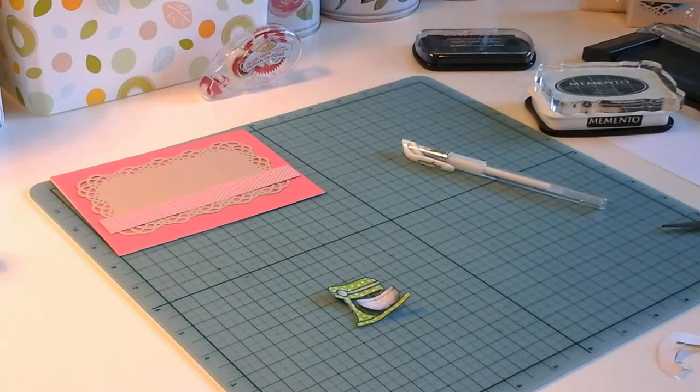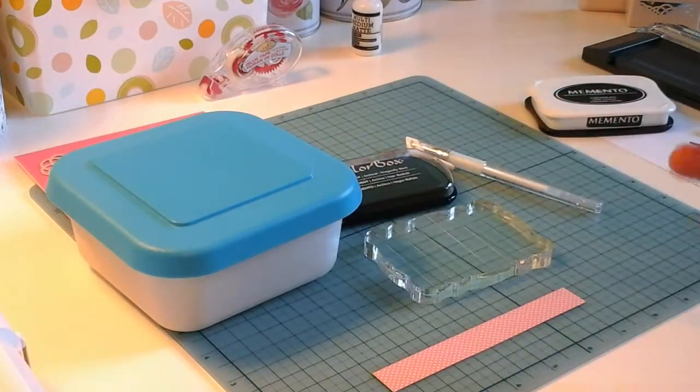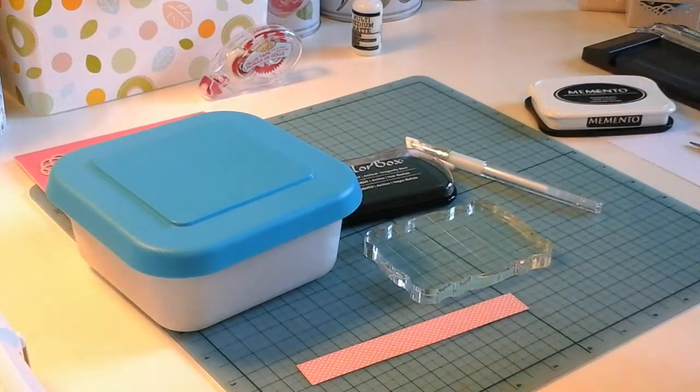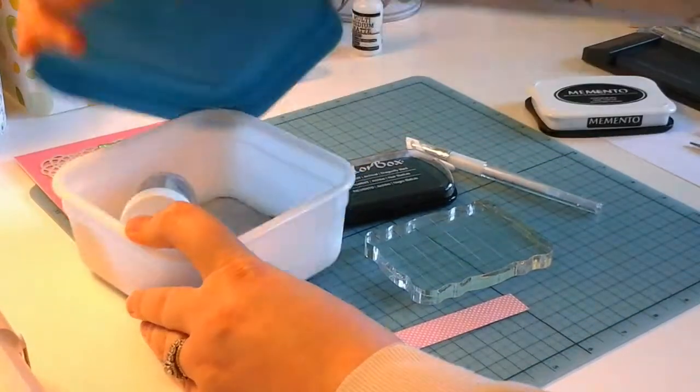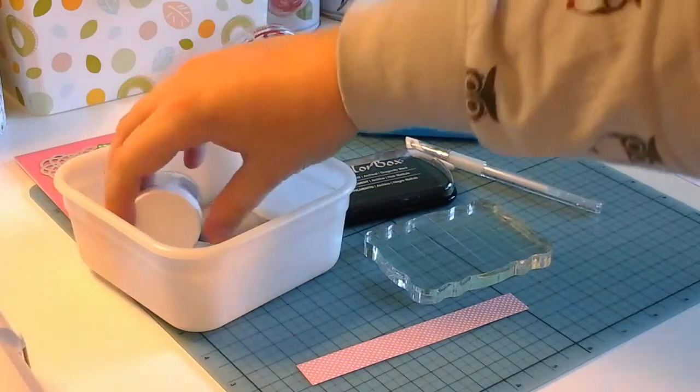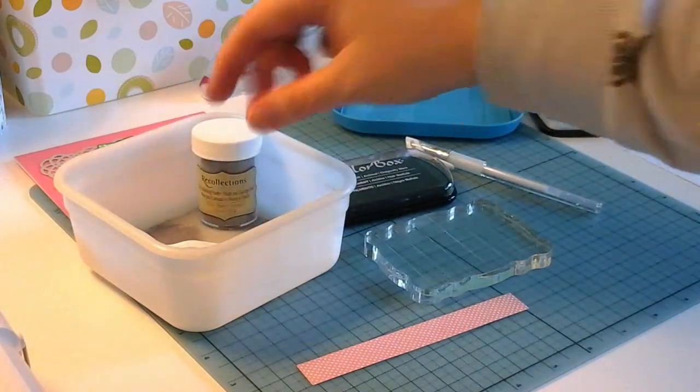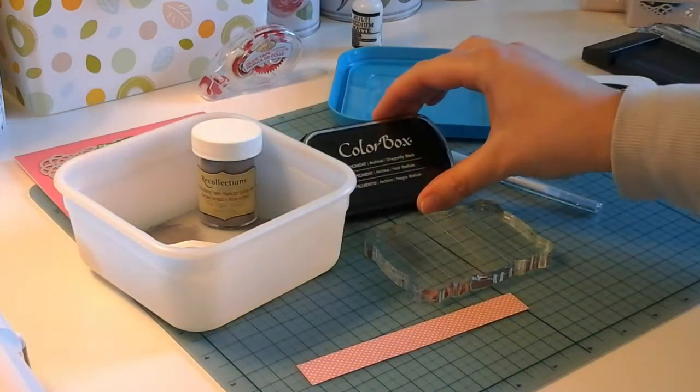And there it is all cut out. Now I set that aside and I'm going to get ready to heat emboss my sentiment. This is my first time heat embossing for a card on this channel. I have in here the silver embossing powder and just a little spoon and somewhere to put it. And then I also have my pigment ink. I'm going to use black.